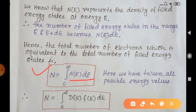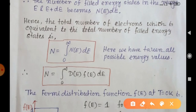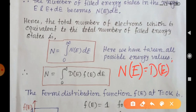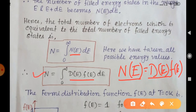The total number of filled energy states, or number of electrons, can be found by integrating the filled energy states over all possible energy values from 0 to infinity. We have N(E) = D(E)·F(E), where D(E) is the density of allowed energy states and F(E) is the Fermi function. Substituting, the total number of electrons n is the integral from 0 to infinity of D(E)·F(E)·dE.